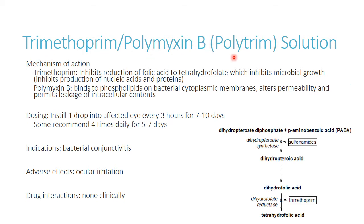Next, we have trimethoprim and polymyxin B — a common combination drug called Polytrim. Trimethoprim works by blocking folic acid utilization within bacteria, affecting DNA production. Polymyxin B is a cell wall inhibitor — a different combination than typically seen, since trimethoprim is usually mixed with a sulfa drug like sulfamethoxazole. Polymyxin B is not ideal when given IV due to systemic toxicities, but topically it's fine. The only issue may be a little ocular irritation. Depending on your patient, insurance, and previous antibiotics received, you might choose erythromycin versus Polytrim.